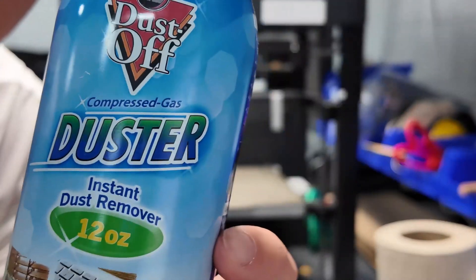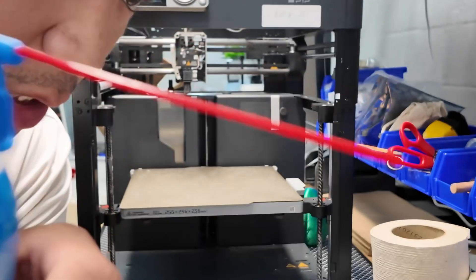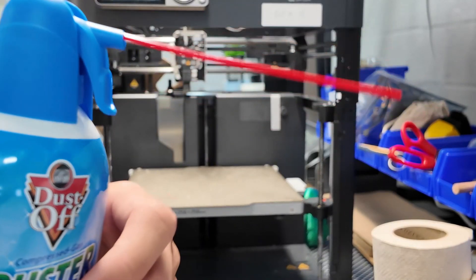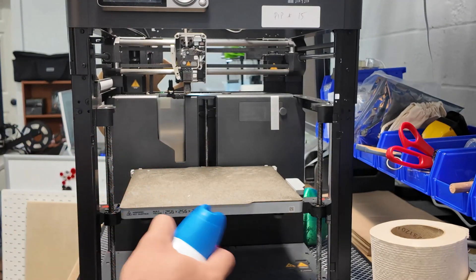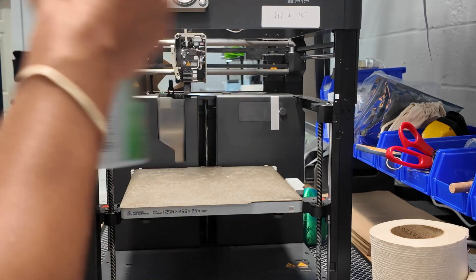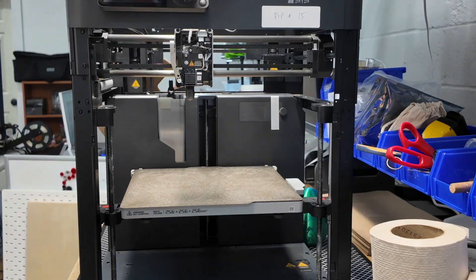All right, this guy, duster. Compressed air duster. I have an electric version of this. I don't know where it is, so for now we're just going to use this. I have like four cans of this, and I just do a light spray all around the printer.